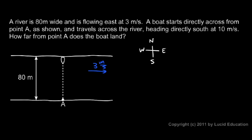As the boat travels across the river, the current makes it drift to the right, so it ends up moving in a path like this. Even though it's pointing south the whole time, it ends up being carried to the right by the current, and it ends up here. And we want to find this distance — how far downstream from point A it lands.